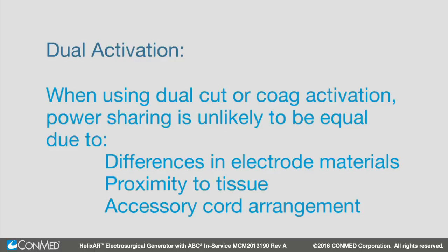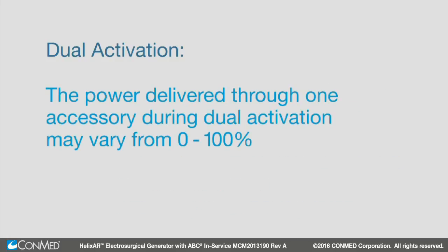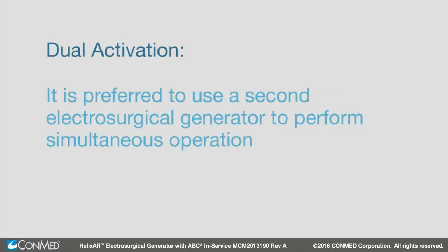Note that when using dual cut or coag activation, power sharing is unlikely to be equal due to differences in electrode materials, proximity to tissue, and accessory cord arrangement. The power delivered through one accessory during dual activation may vary from 0 to 100%. It is preferred to use a second electrosurgical generator to perform simultaneous operation.